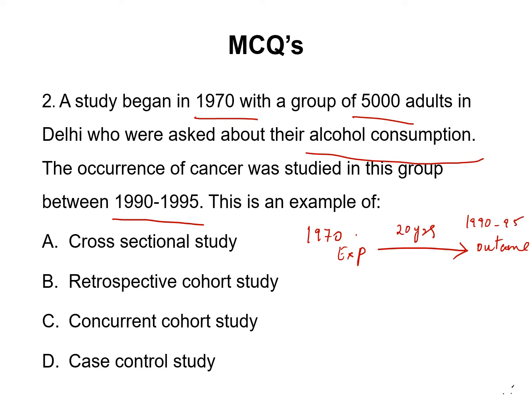So what kind of study design is this? The study is moving forward from the cause to the effect, from exposure to outcome. So it is a forward-looking cohort study.